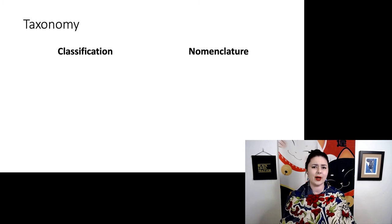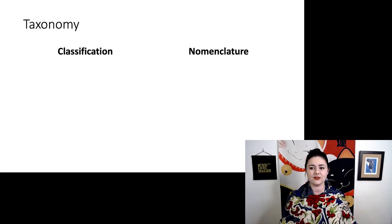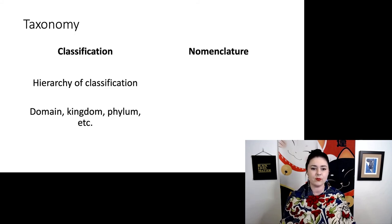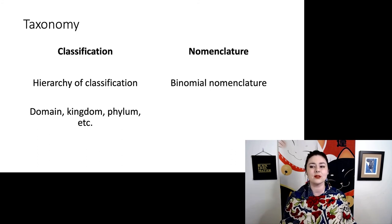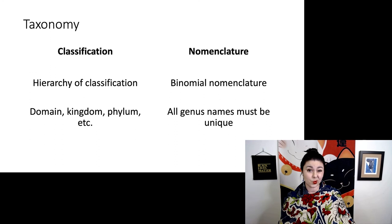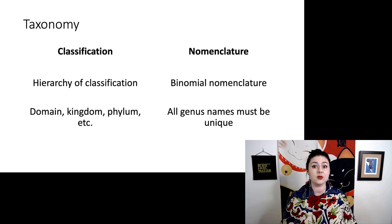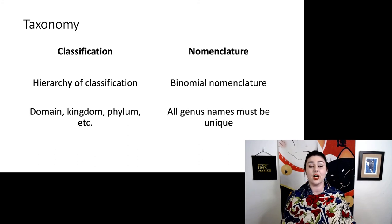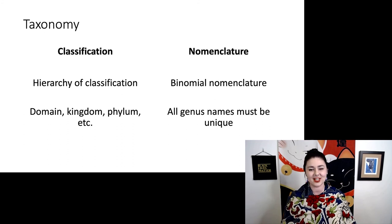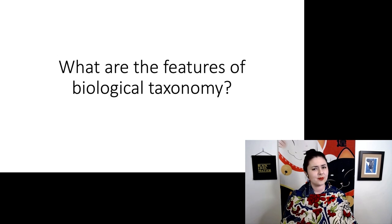So let's remind ourselves about taxonomy. We have these two parts: classification and nomenclature. Classification is that hierarchy of groups — domain, kingdom, phylum, and all of those different ones. Our nomenclature is this system of binomial nomenclature. There are many different rules — one of them is that all genus names must be unique, there can be no repeats. There are also several different systems and governing organizations; you need to follow their rules before you can officially submit a scientific name. And sometimes there are fights about them, which is kind of cute.